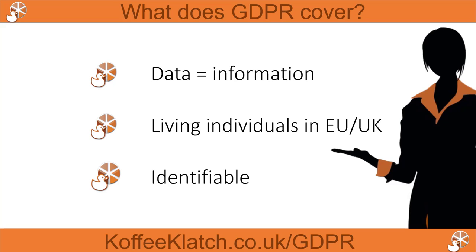So it's not confined to their name and address. It might be two or three different factors that mean if you put them together, you can identify them. But when we're dealing with participants at an event, it's normally their name and their email address, at the very least, that we are dealing with.